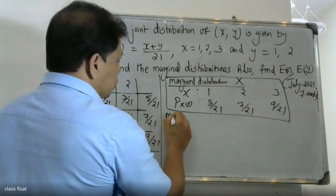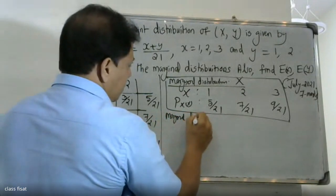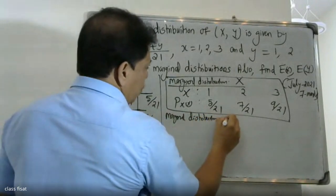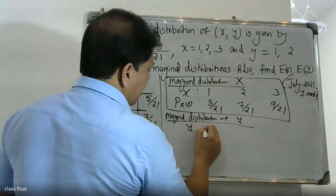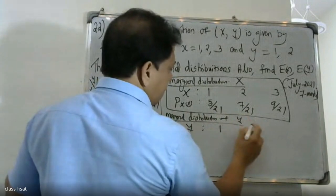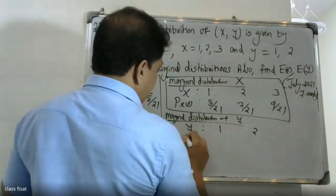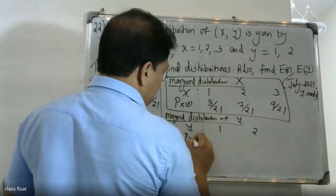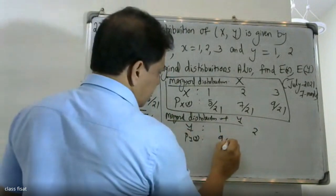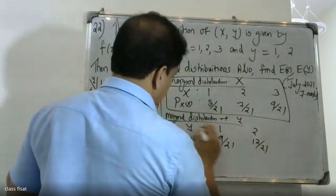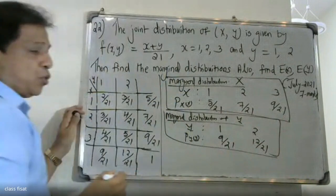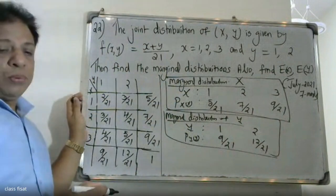For the marginal distribution of Y, with y taking values 1 and 2: P_Y(y) equals 9/21 when y=1 and 12/21 when y=2. That gives us the marginal distribution of Y.